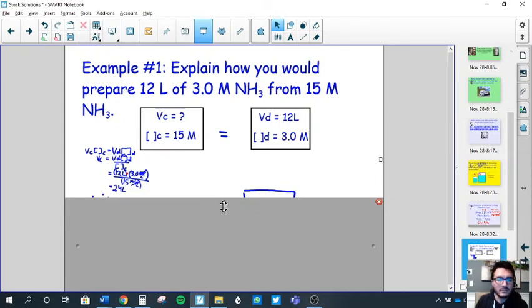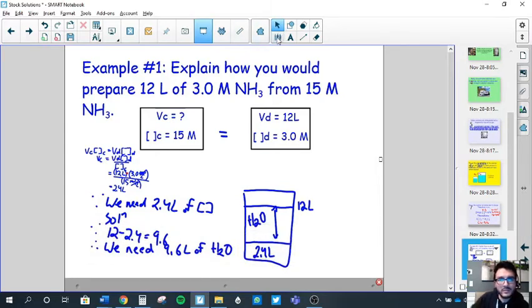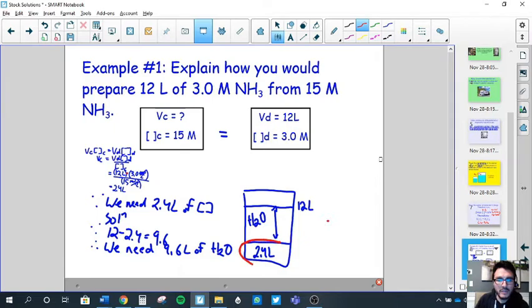Now what does that mean? This is the important part. Since you need 2.4 liters of your concentrated solution, think of it this way. 2.4 liters is how much came from your concentrated solution, but you don't want 2.4 liters, you want 12 liters, and that's what you solved for. So what that means is the rest of it has to be water. The rest of it to dilute has to be filled up to the 12 liter mark. Meaning then that 12 minus 2.4 is 9.6, so you need 9.6 liters of water.